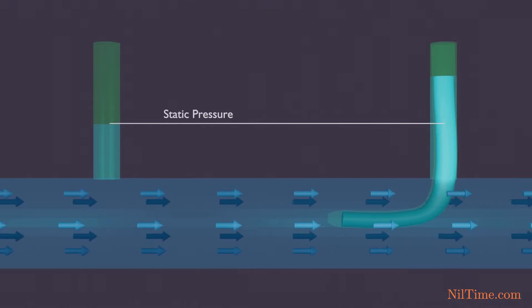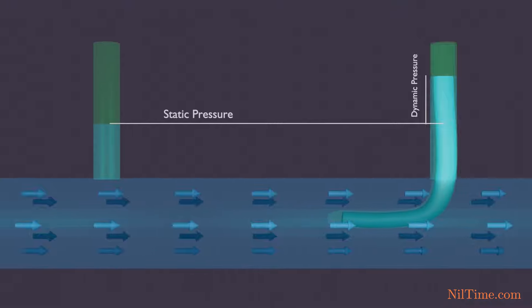The column height of the water will increase. And this extra height is called the dynamic pressure, caused due to stagnation pressure.